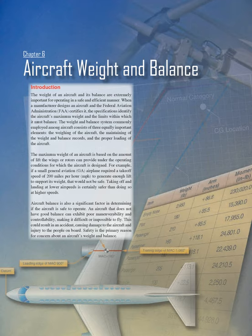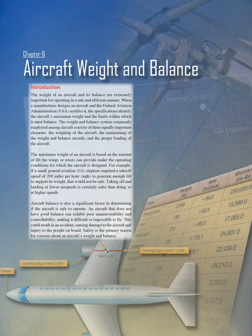The weight and balance system commonly employed among aircraft consists of three equally important elements: the weighing of the aircraft, the maintaining of the weight and balance records, and the proper loading of the aircraft. The maximum weight of an aircraft is based on the amount of lift the wings or rotors can provide under the operating conditions for which the aircraft is designed.